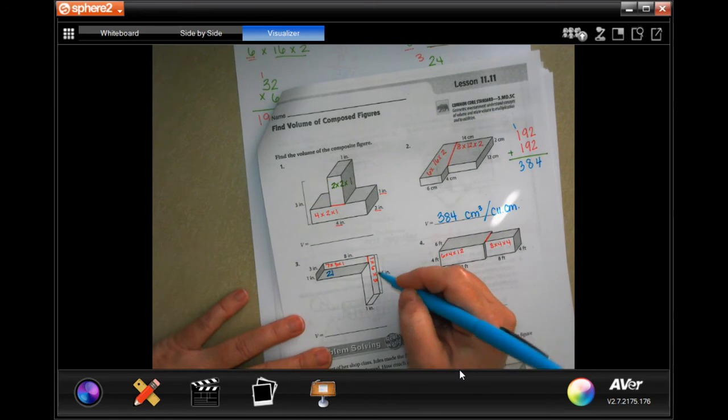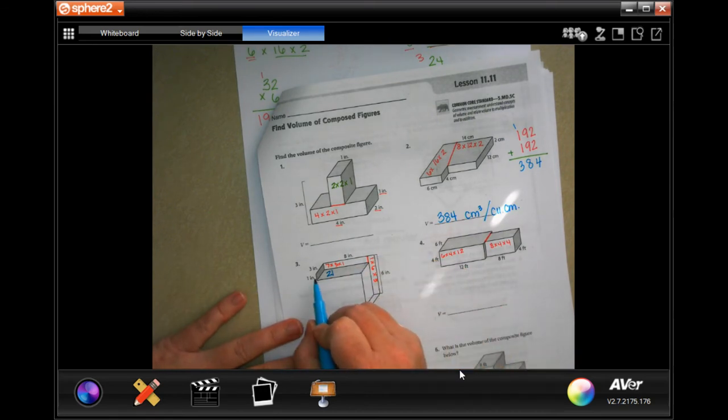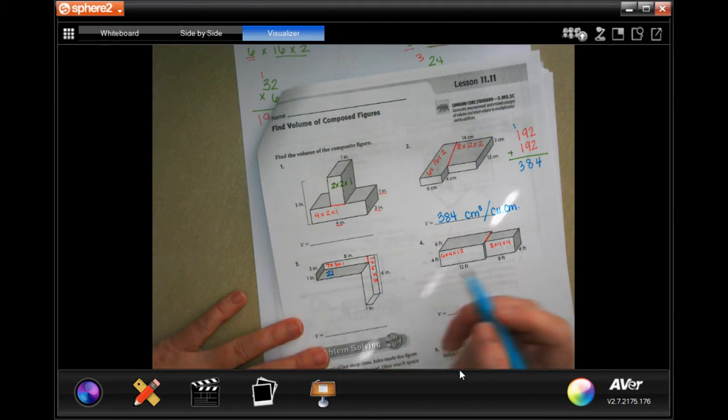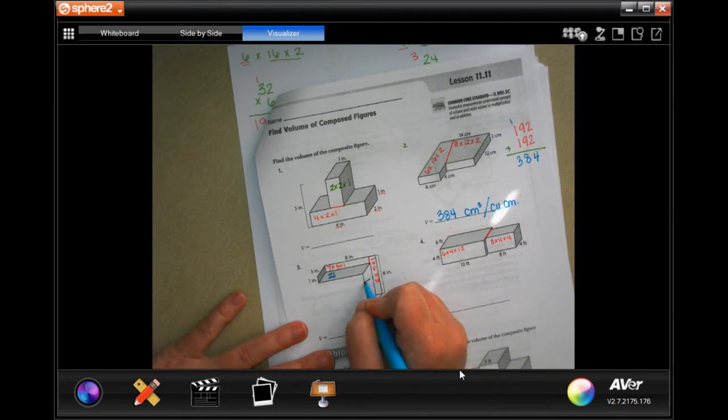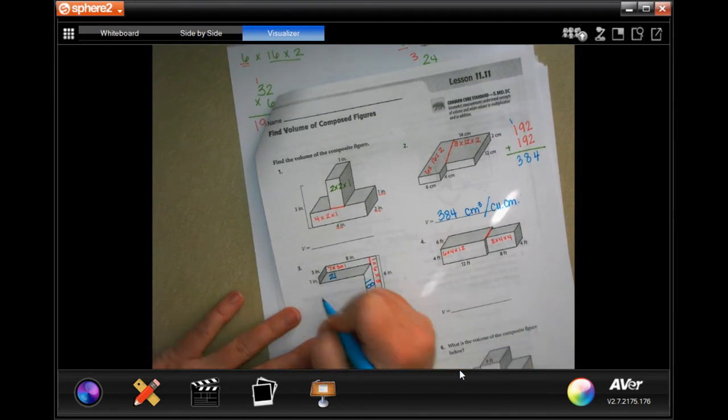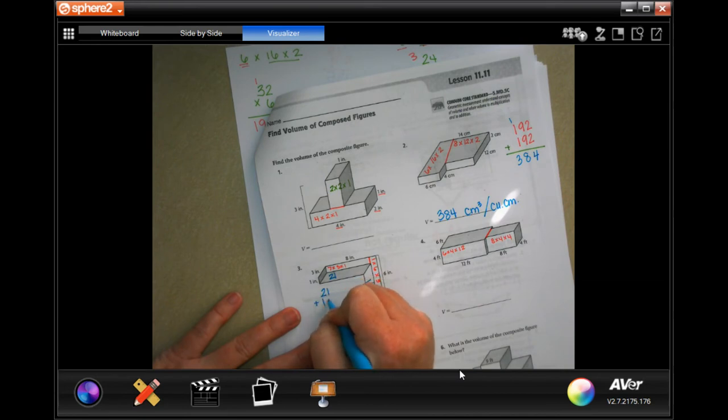This one is 6 tall, 1 across, and this tells me it's 3 deep. 1 times 6 is 6, 6 times 3 is 18. Now I'm just going to do 21 plus 18. 39 inches cubed.